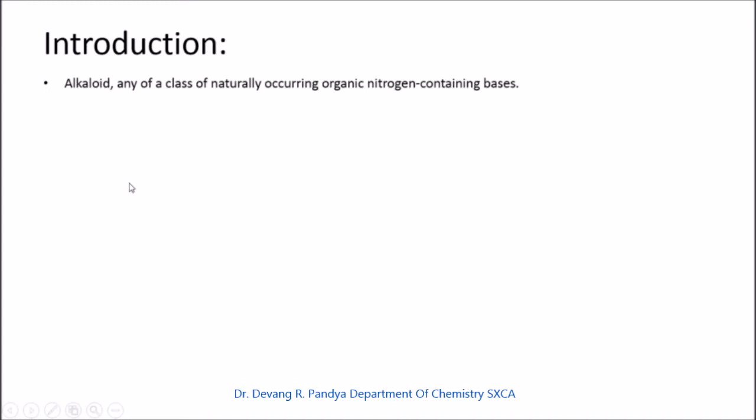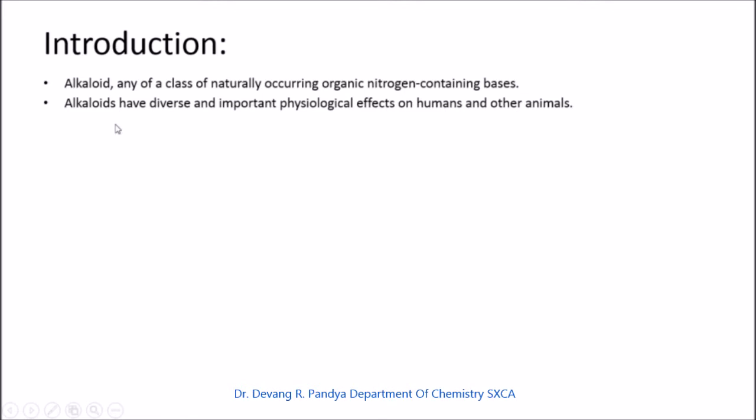Let us begin with the introduction of alkaloids. An alkaloid is any class of naturally occurring organic nitrogen-containing bases. Compounds which contain nitrogen and have a basic nature are considered alkaloids. Alkaloids have diverse and important physiological effects on humans and other animals.